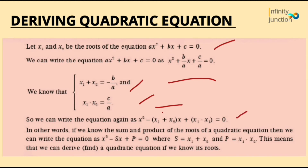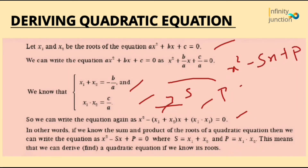If we call x₁ plus x₂ as S (denoting sum) and x₁ times x₂ as P (product of roots), then you can rewrite the equation as x² minus Sx plus P equals to 0. This is the required quadratic equation. If the roots are given, you can directly put those root values into S and P — the sum and product of roots — to find the quadratic equation.